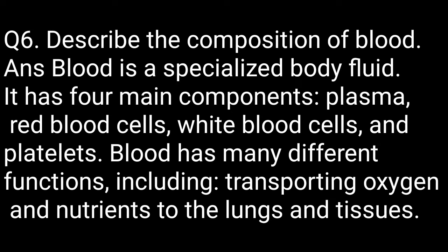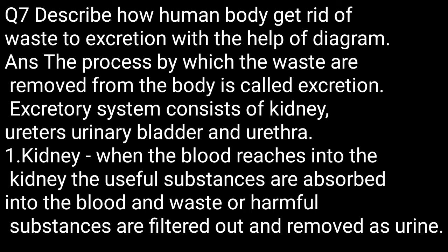Question seven: describe how the human body gets rid of waste through excretion, with the help of a diagram. The process by which waste is removed from the body is called excretion. The excretory system consists of the kidney, ureter, urinary bladder, and urethra. First, the kidney — when blood reaches the kidney, the useful substances are absorbed into the blood.